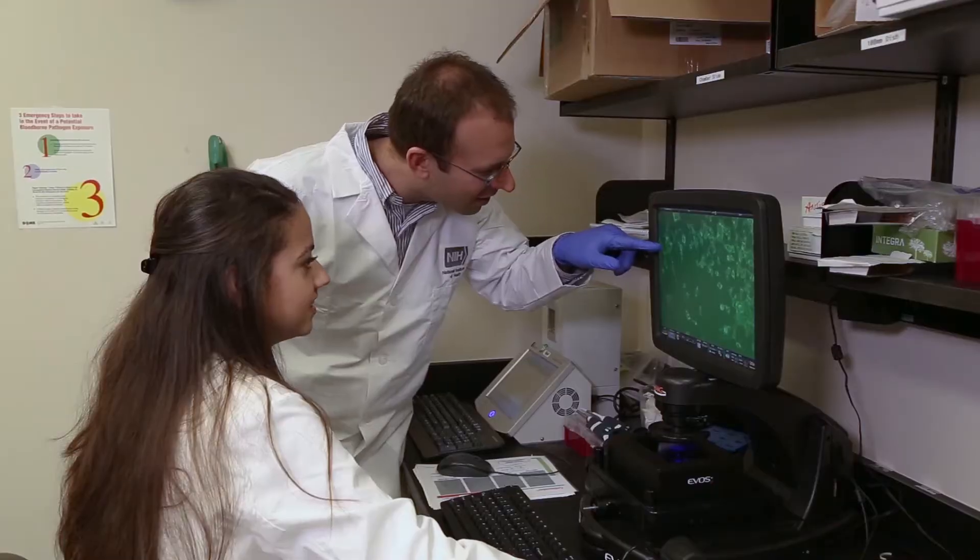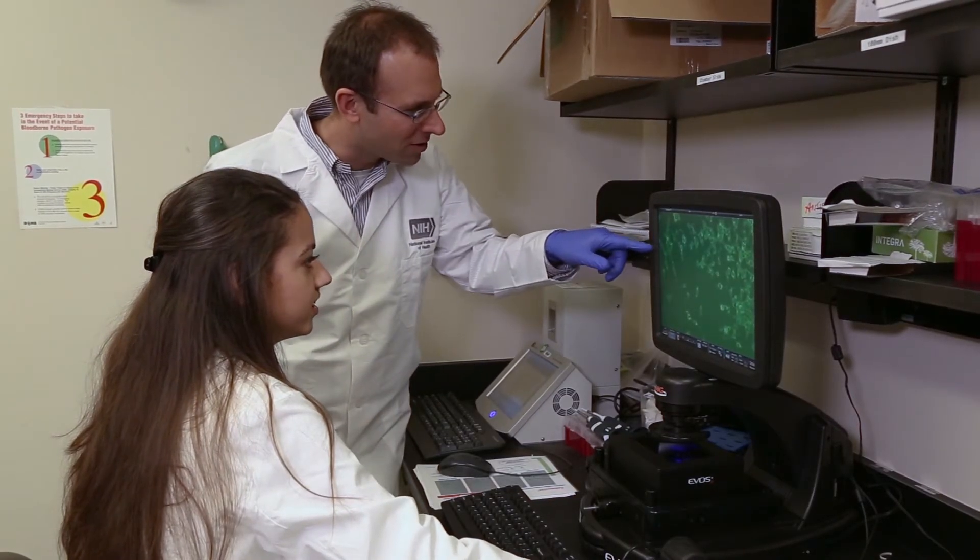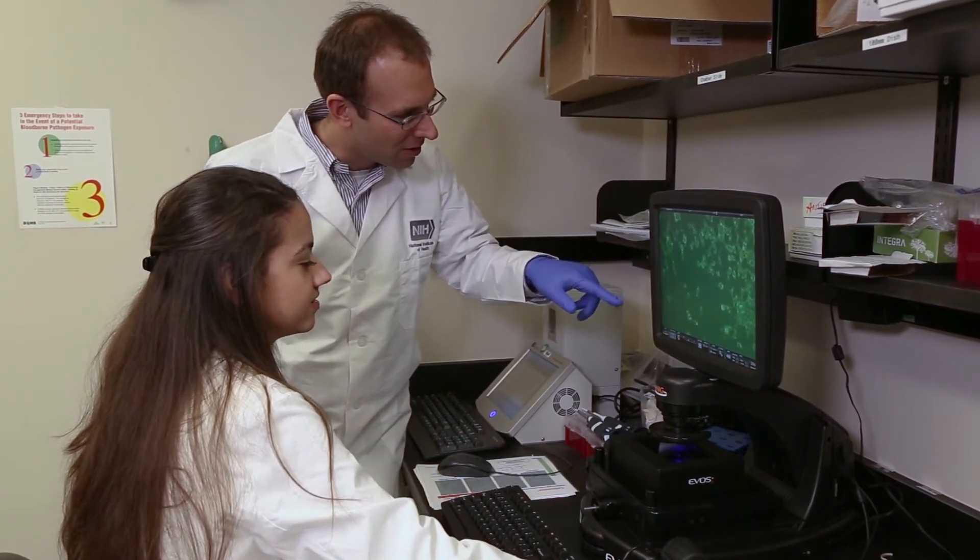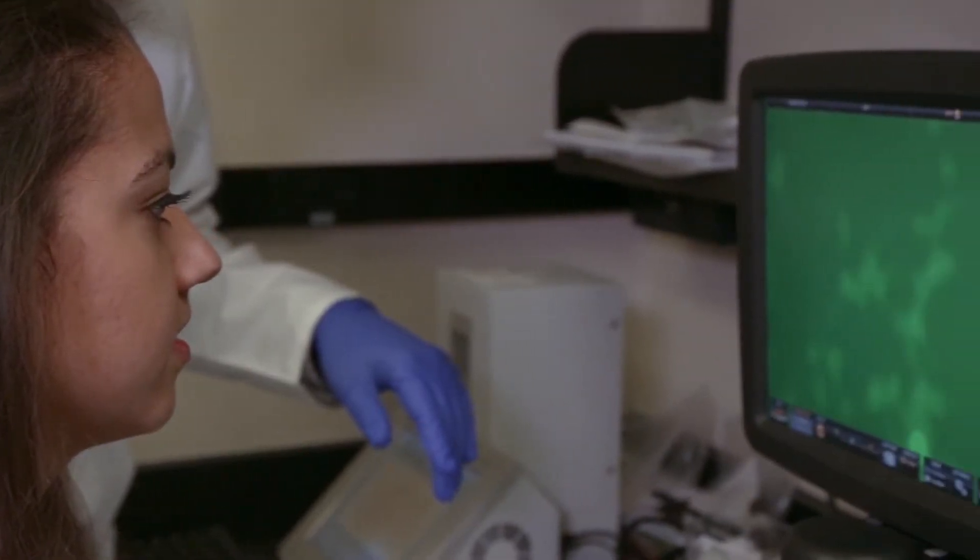The sterility is due to the loss of germline stem cells, which give rise to sperm and egg, in a process called apoptosis, a form of cell death. At the same time, a few of these cells survive and start dividing uncontrollably, giving rise to testicular germ cell tumors.